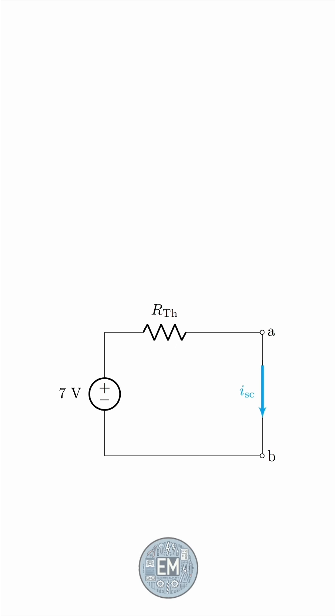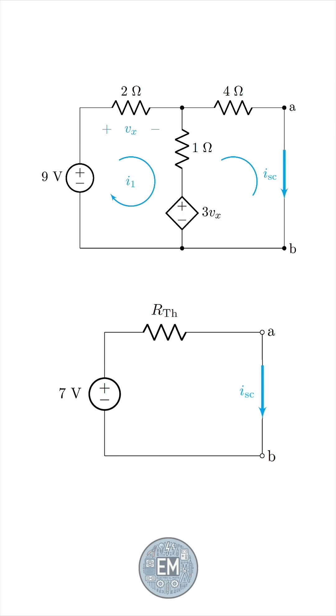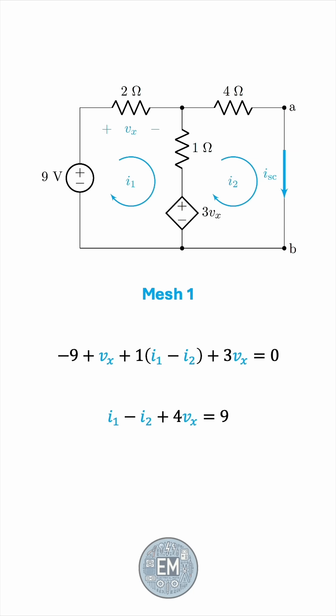For this, we'll use mesh analysis for a change. We'll draw our two clockwise currents, I1 and I2, and we'll apply KVL for the two meshes. For mesh 1, the equation simplifies to I1 minus I2 plus 4Vx. Vx is 2I1, so the equation purely in terms of the mesh currents becomes 9I1 minus I2 equals 9.